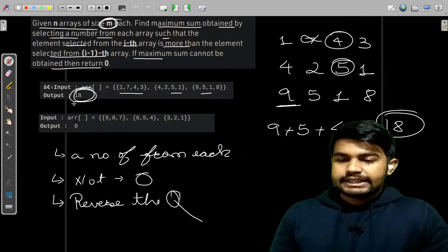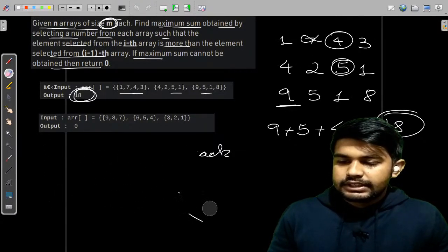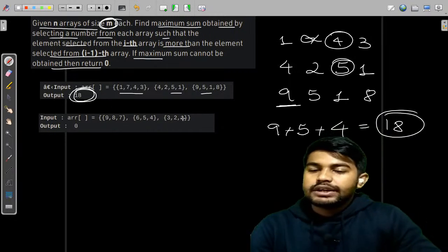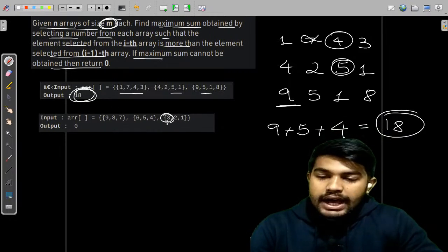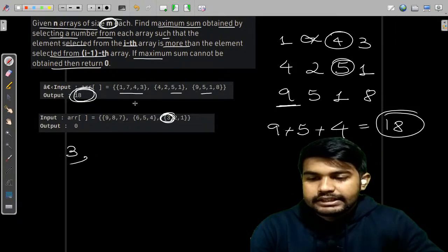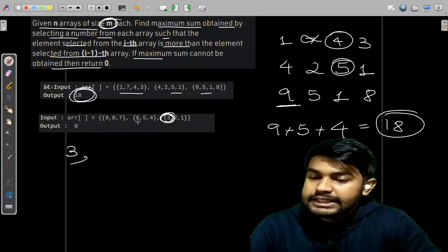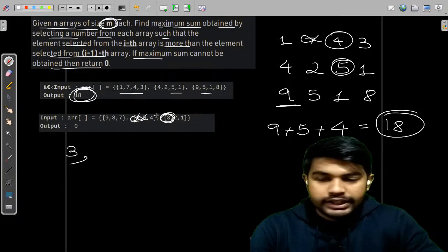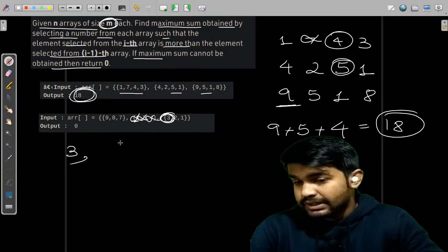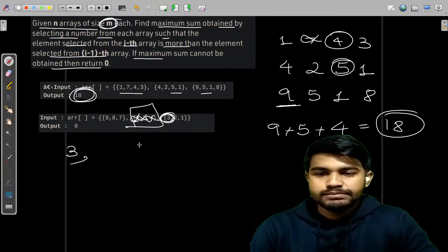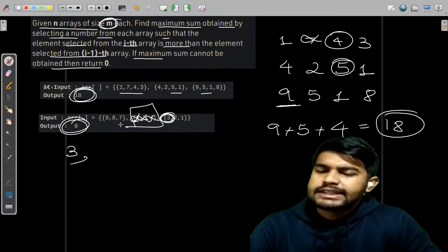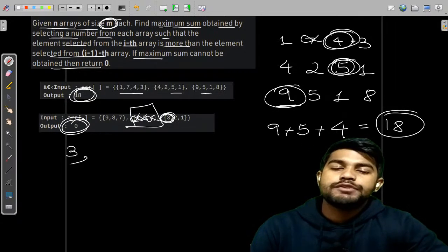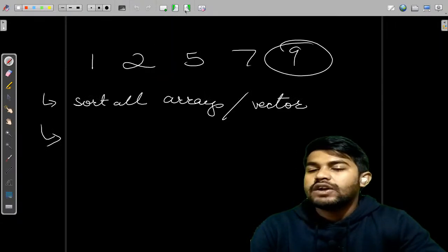Let's now see the second test case. Last value at max can be 3, so we are taking this 3. Then can we take 6? No. Can we take 5? No. Can we take 4? No, because that is also greater than the last inserted element. So we can't take any values. If any value can't be taken we need to return 0, that is why the answer is 0 for this one. For the first one we took 9, then 5, then 4, that is how the answer is 18.